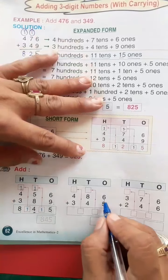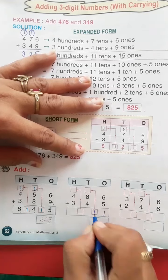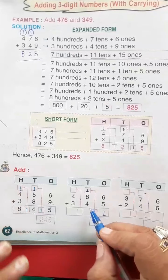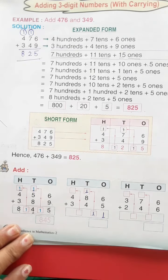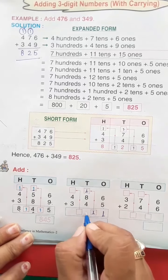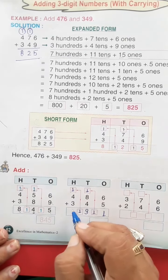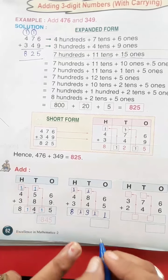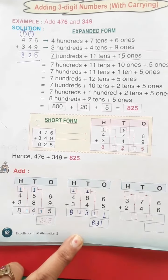This way we do the next sum. Six and five is 11, carry 1. Eight and four is 12, plus 1 is 13, 3 carry 1. Four and three is seven, plus one is eight. So this will become our total: 831.